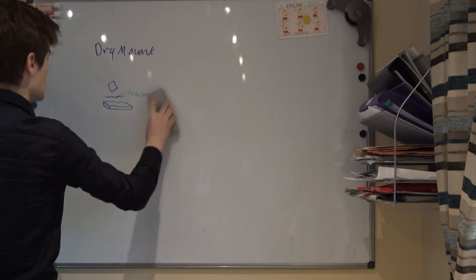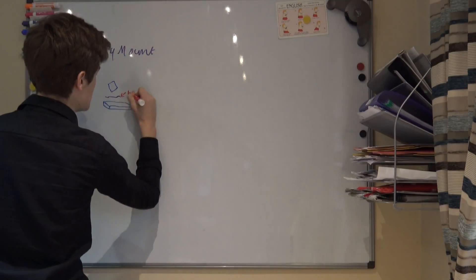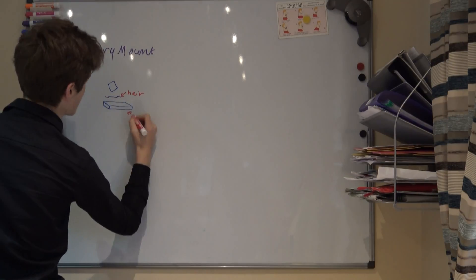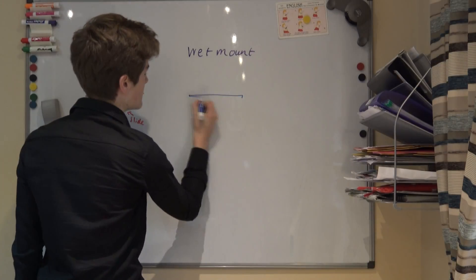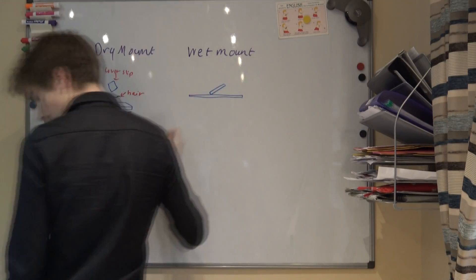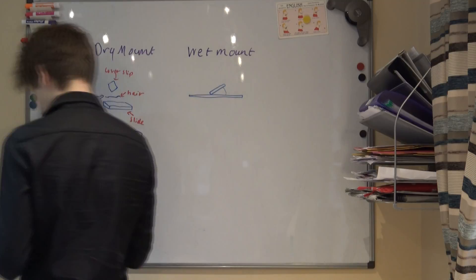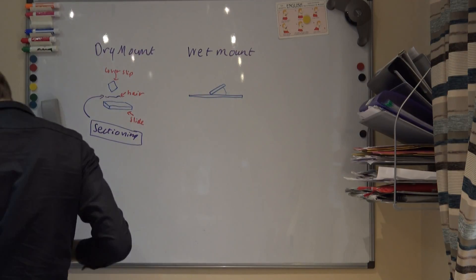As a dry mount, where solid specimens are cut very thinly, which is often known as sectioning, and placed on the centre of a slide with a cover slip on. Or as a wet mount, where specimens suspended in liquid are placed on a slide, and the cover slip is placed on at an angle.